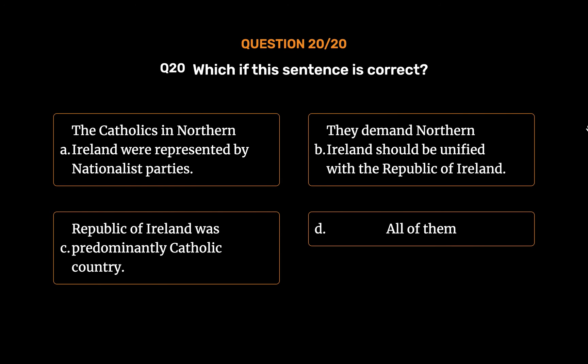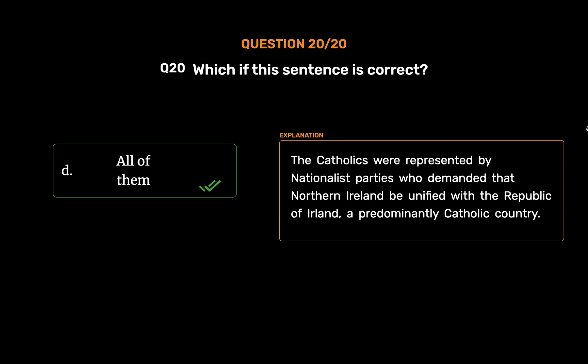The correct answer is Option D: All of them. The Catholics were represented by nationalist parties who demanded that Northern Ireland be unified with the Republic of Ireland, a predominantly Catholic country.